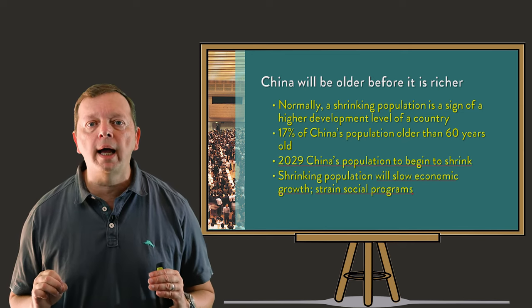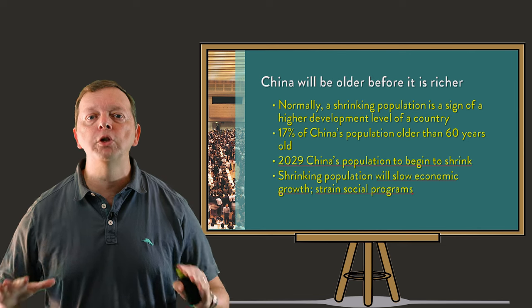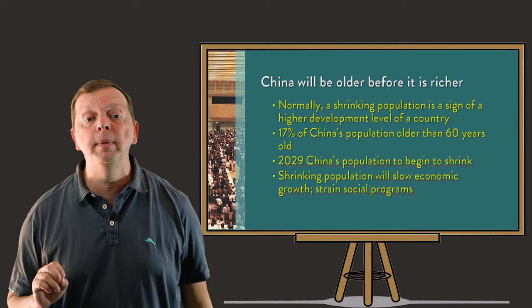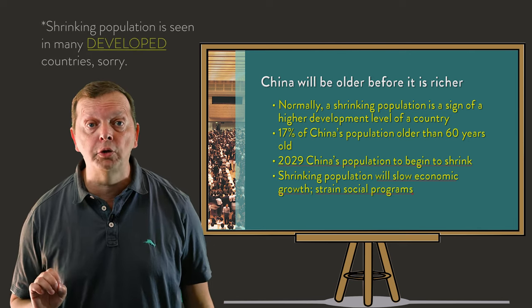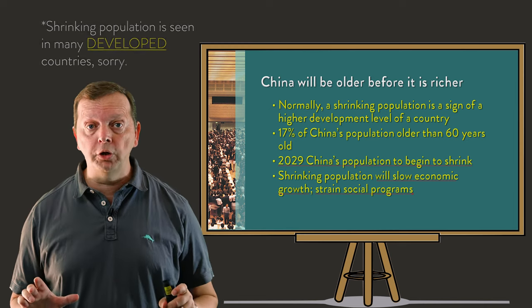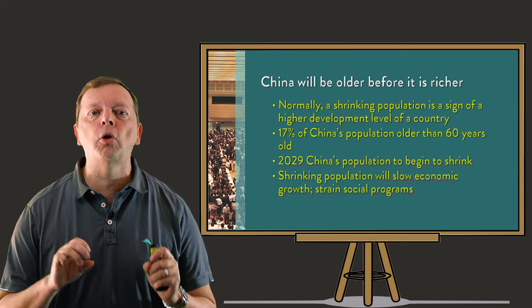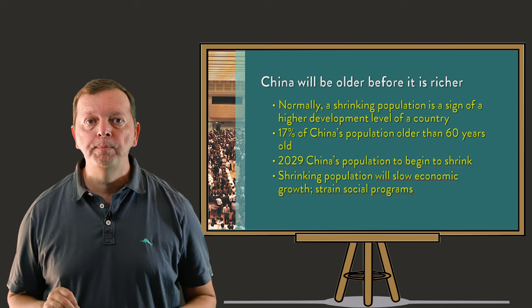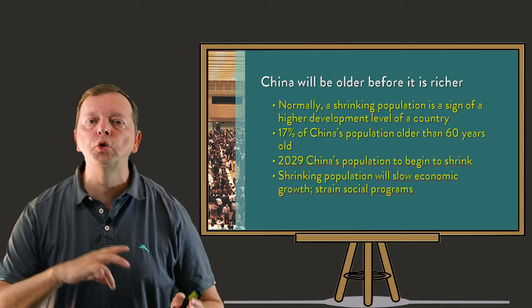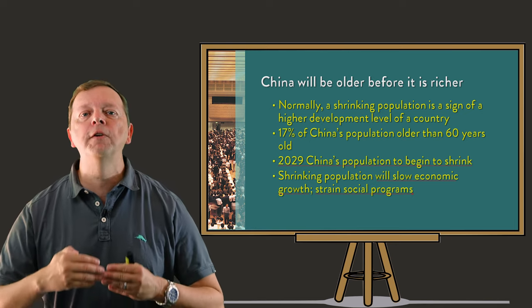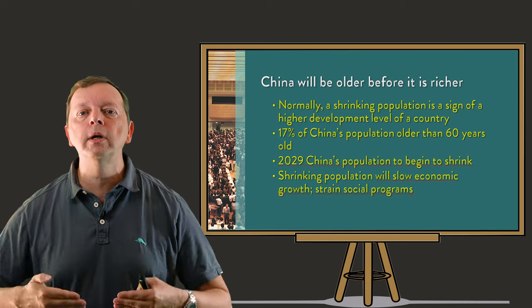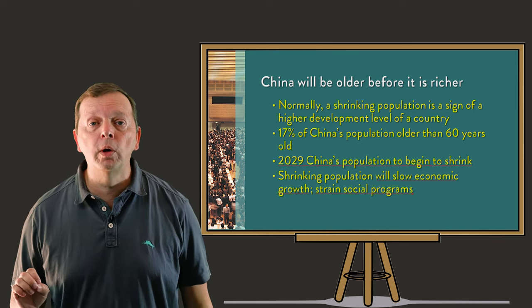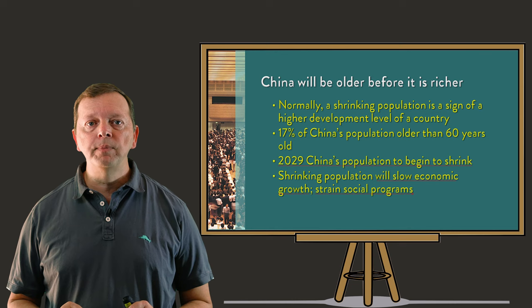By 2029, it is estimated that China's population will begin shrinking. A shrinking population is seen in many developed countries, but China isn't a developed country. Their shrinking population is artificial due to a policy, not development. Therefore, it has not created the social programs sufficiently to care for the millions of future senior citizens. In other words, China isn't Japan.